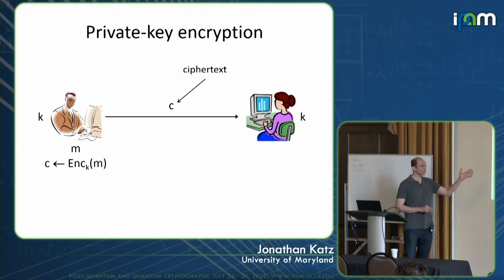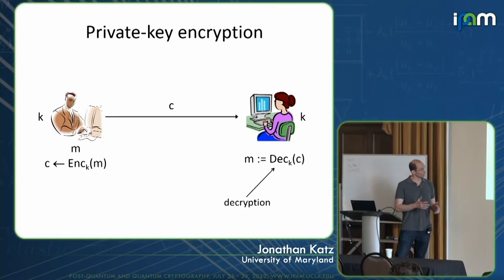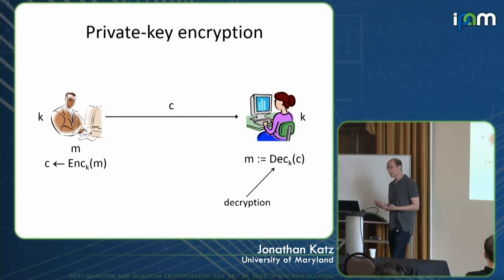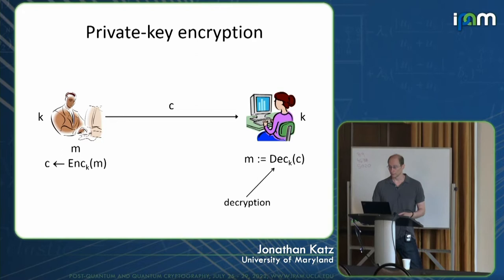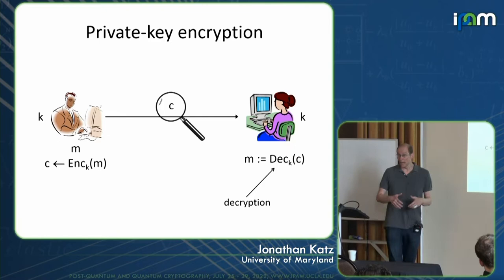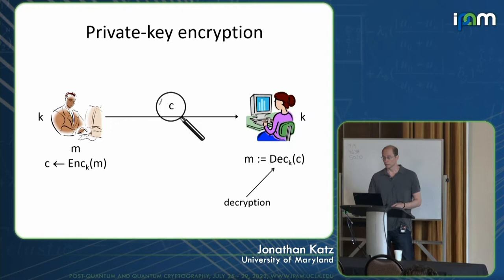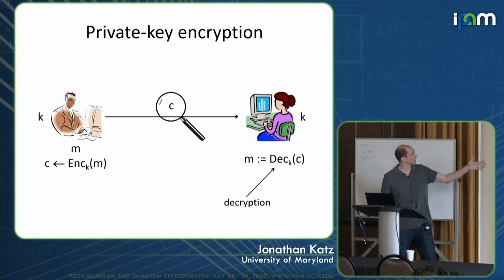The goal at a high level — and we'll spend time formalizing this — is that if we have an adversary eavesdropping on the communication and able to observe the ciphertext C, that adversary should get no information; we want the adversary not to be able to learn the message M that Bob sent. So the terminology here: we have the key, the encryption and decryption algorithms, the message, and the ciphertext.